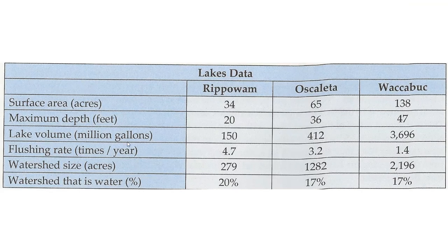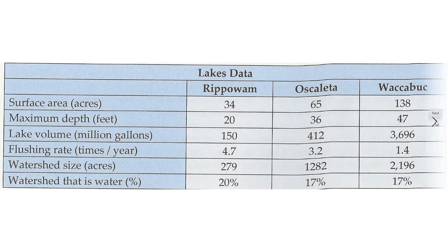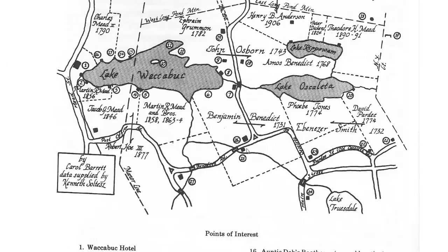A chart shows what we're dealing with in the three lakes. Ripawam is the smallest at 34 acres, Oskalita is 65 acres, and Wacabuck is larger than the two combined at 138 acres. In terms of volume, it goes from 150 million gallons for Ripawam up to 3,696 million gallons for Lake Wacabuck. The watershed size increases proportionally by roughly ten times across the three lakes.